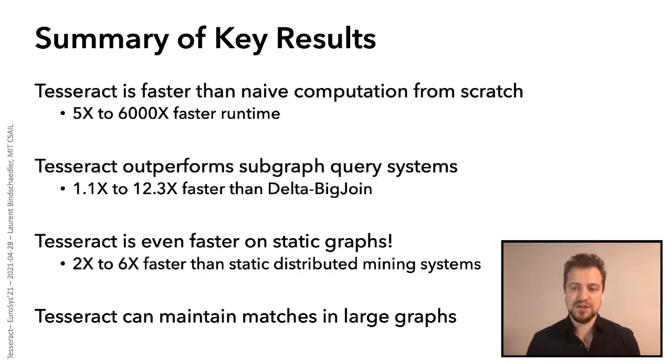So let me summarize the key results in the paper. So the first result is that Tesseract is significantly faster than completely recomputing the matches from scratch. The second result is that Tesseract outperforms the closest system supporting evolving graphs. The third result, which is kind of surprising, is that Tesseract is actually faster than distributed graph mining on static graphs. Finally, we can also use Tesseract to track the updates to the match set in very large graphs after we've computed the original match set.